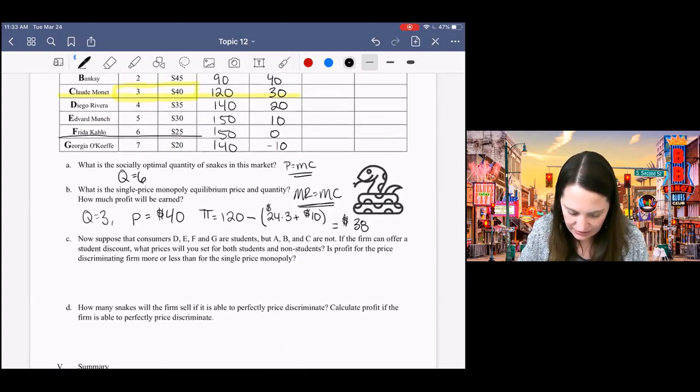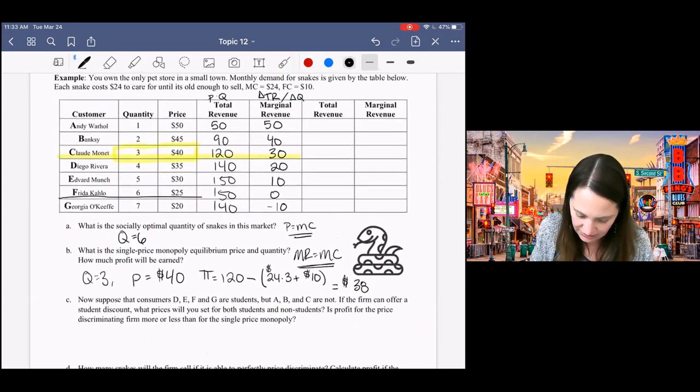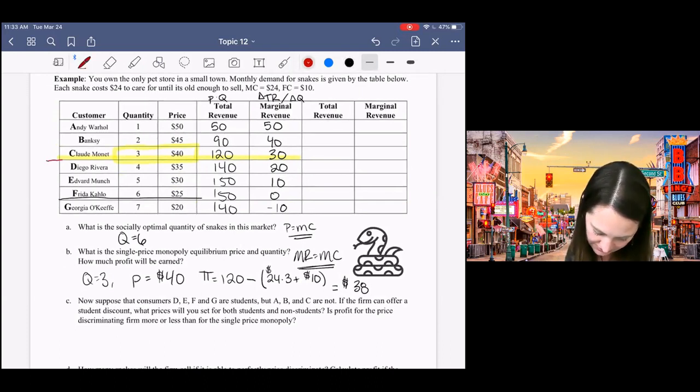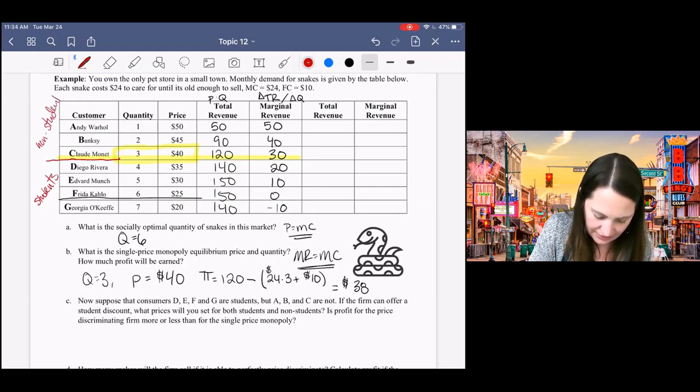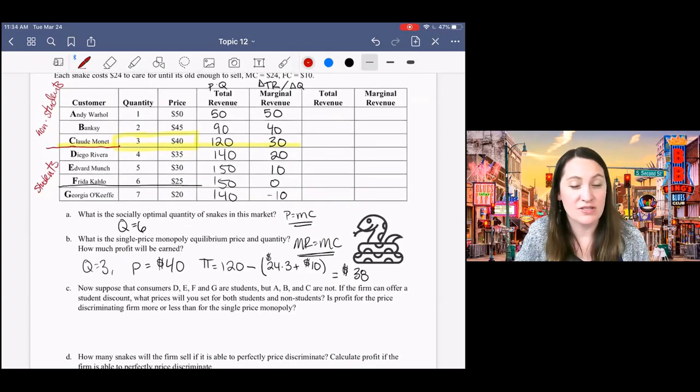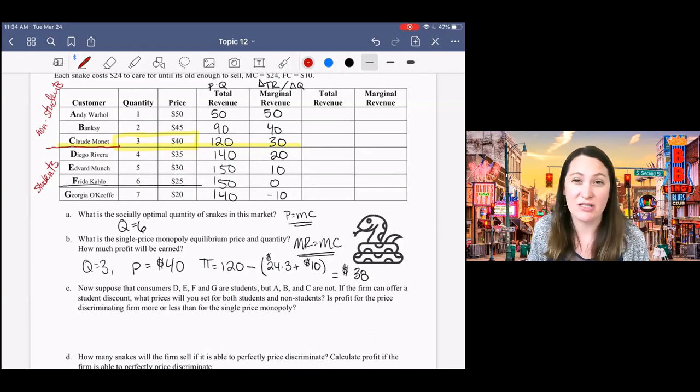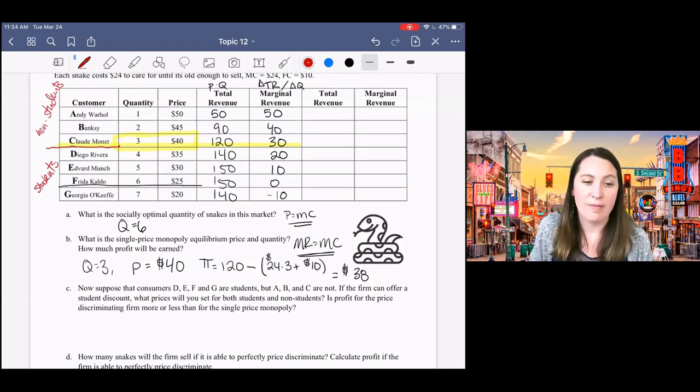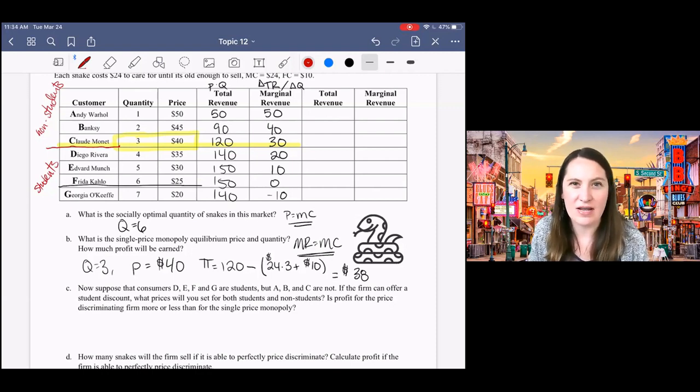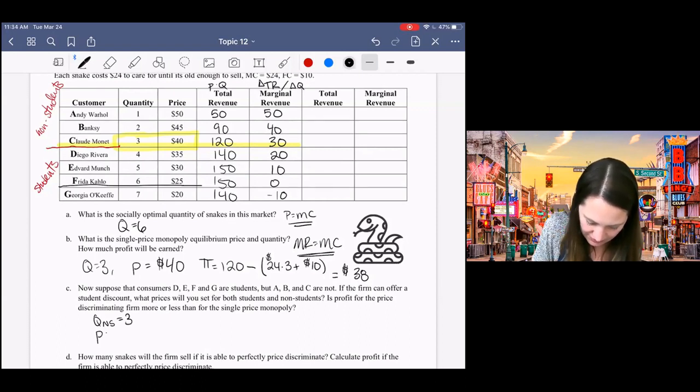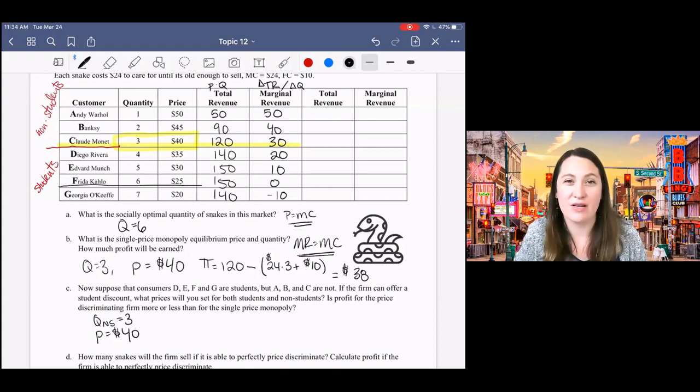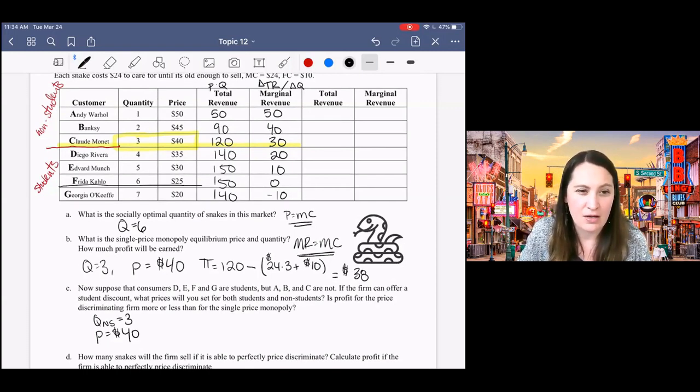All right. The next question is now assume that consumers D, E, F, and G are students and A, B, and C are not students. So we're going to split the market here. So we have students down here. They're not willing to pay as much as the non-students. And we're going to do the same thing that we just did comparing marginal revenue and marginal costs, but now just separately for each of these two groups. Remember that the first group, the non-students on the top there, we've already calculated their marginal revenue. So we don't need to do any additional calculations. The quantity for the non-students will equal three and the price will equal 40. I just need to figure out how much I'm going to sell to the students and what kind of discount I'm going to give them.